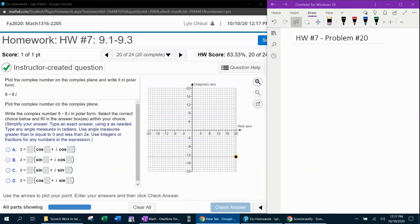All right, here we go. Question number 20 from our 1316 homework number 7 in MyLabMath. It says plot the complex number on the complex plane and write it in polar form.